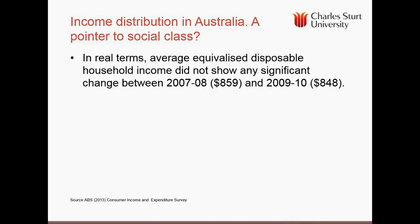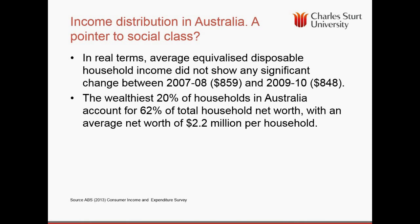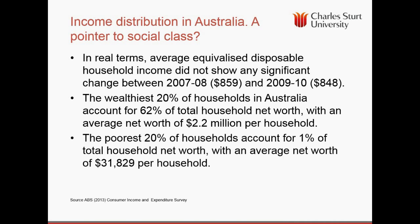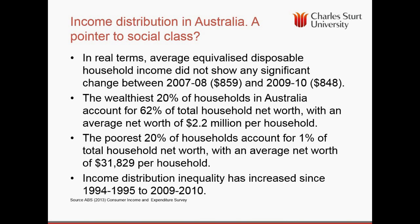Is there a social class system in Australia? One way of looking at this is to examine income distribution. The wealthiest 20% of households in Australia account for about 62% of total net worth, with an average net worth of $2.2 million, whereas the poorest have only 1% of net worth with an average of $31,000 per household. According to the Australian Bureau of Statistics, income inequality increased between 1994–95 and 2009–10, so it looks like we do have a social class system in Australia, one based primarily on wealth.